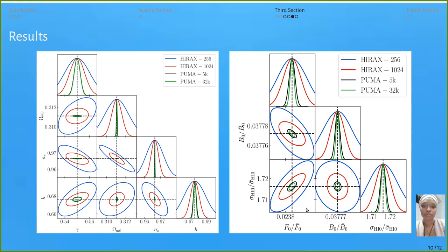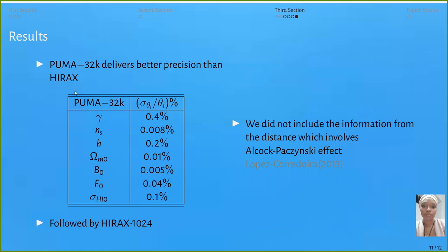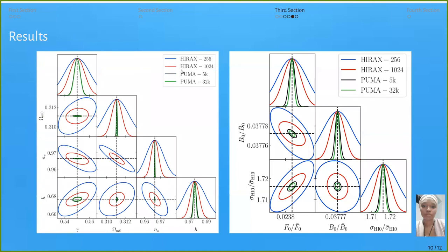These parameters on the right depend on redshift. When we compute this, we have to choose a smaller redshift bin as possible to get better constraints. For the results of PUMA, we can see gamma has 0.4%, sorry, 4%. For other parameters as well, we have better precision than HIRAX. HIRAX-1024 follows as compared to other surveys.